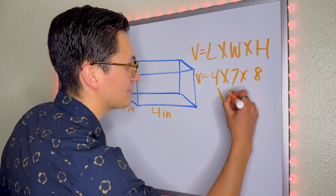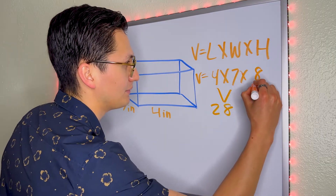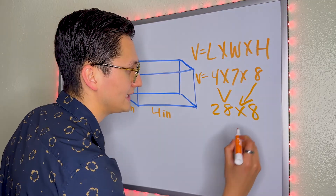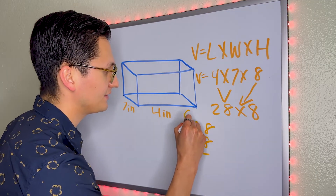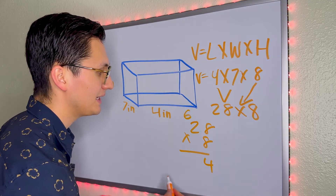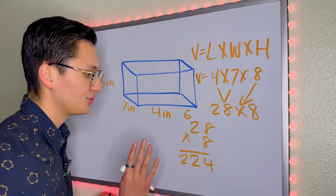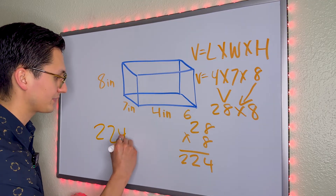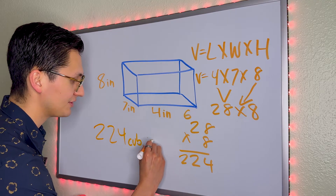So 4 times 7 is 28, and then we bring the 8 down. 28 times 8: 8 times 8 is 64, 8 times 2 is 16, plus 6 will be 22. So the answer is 224 cubic inches.